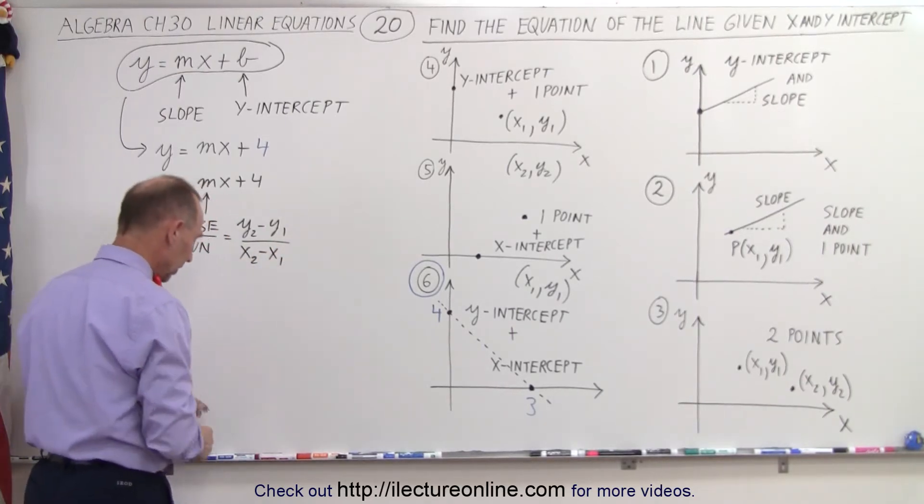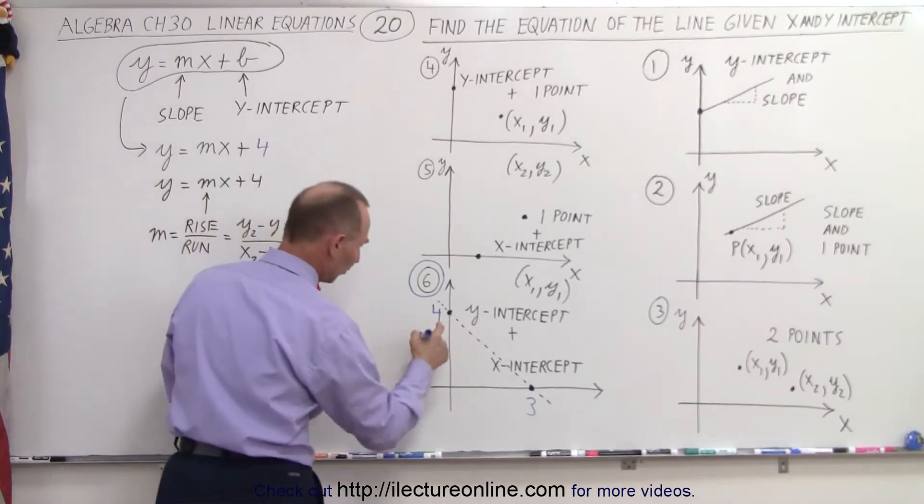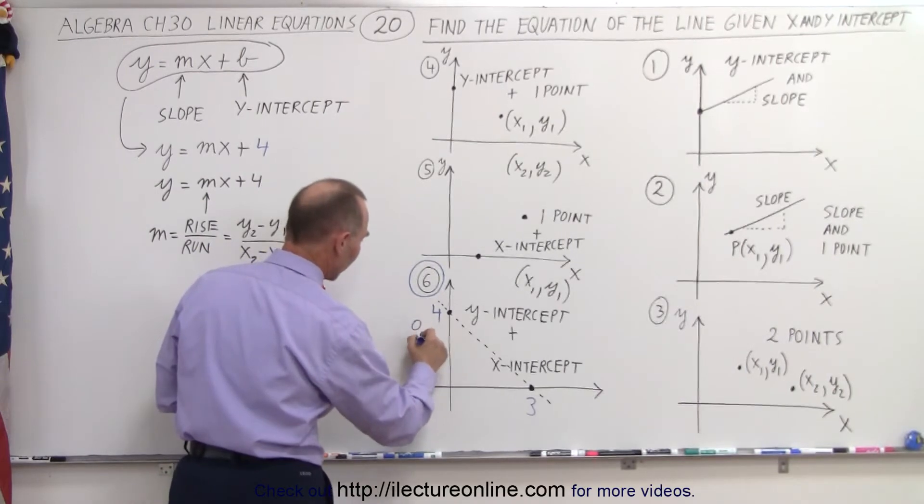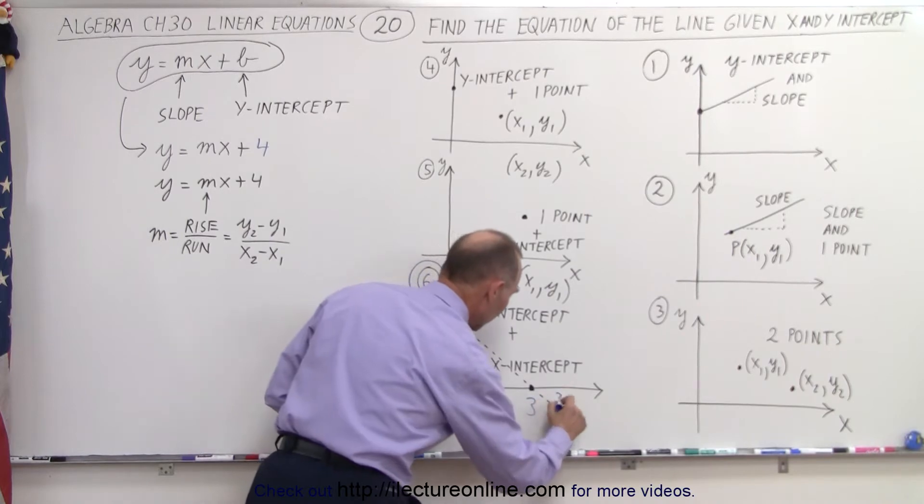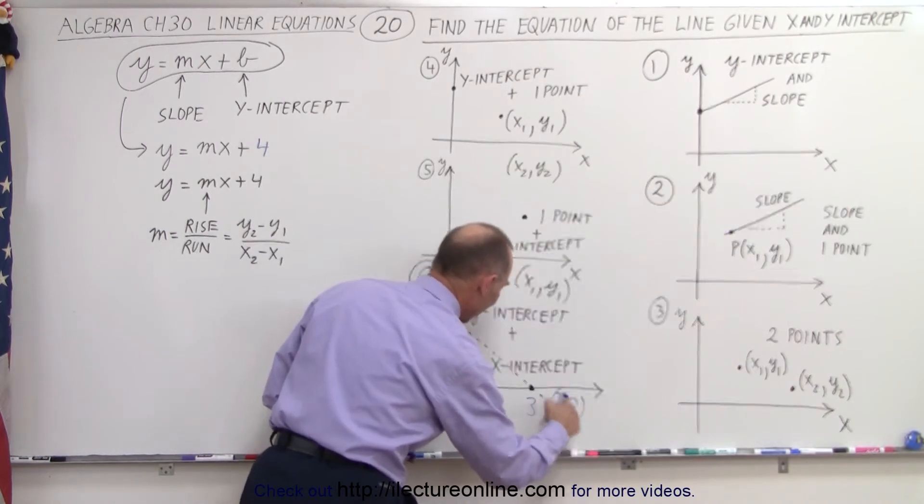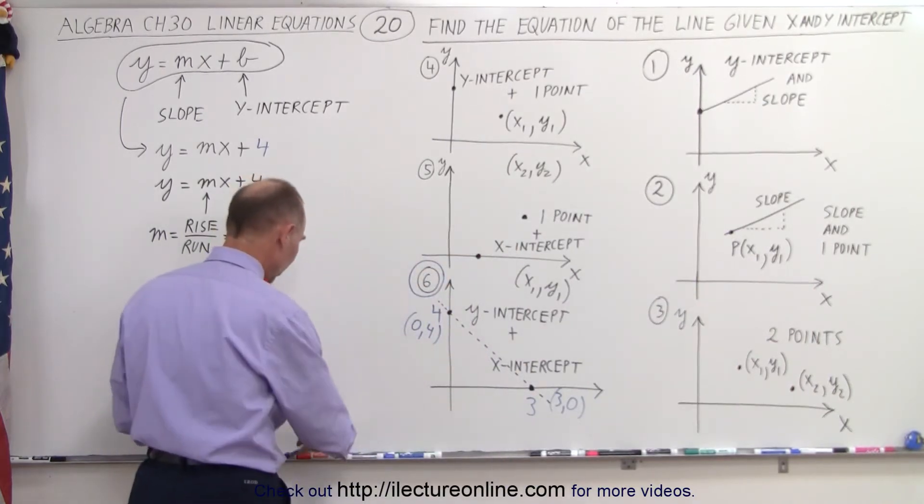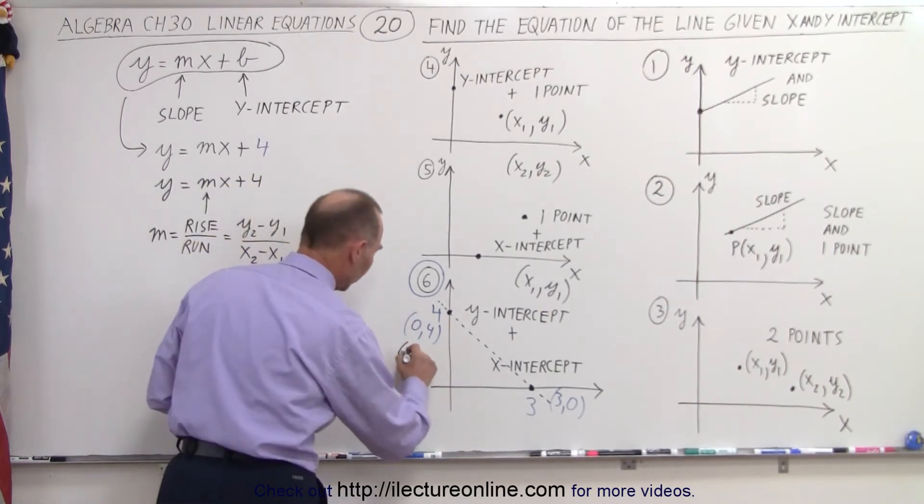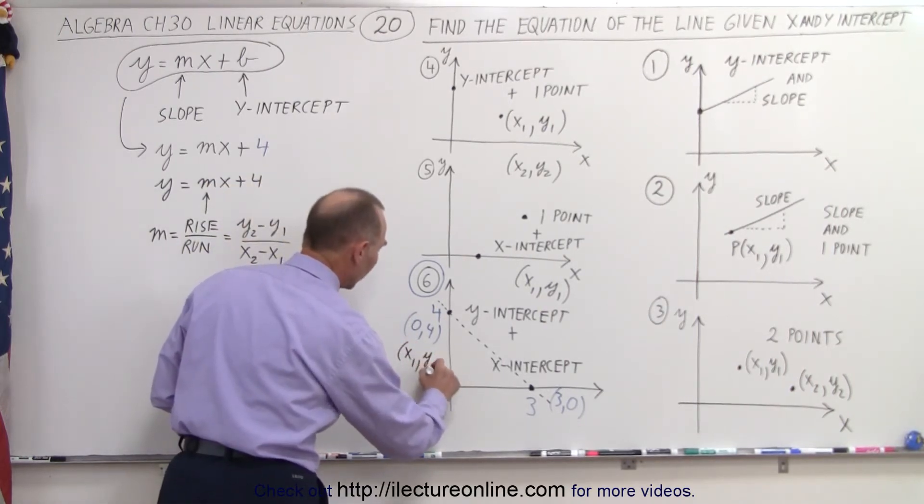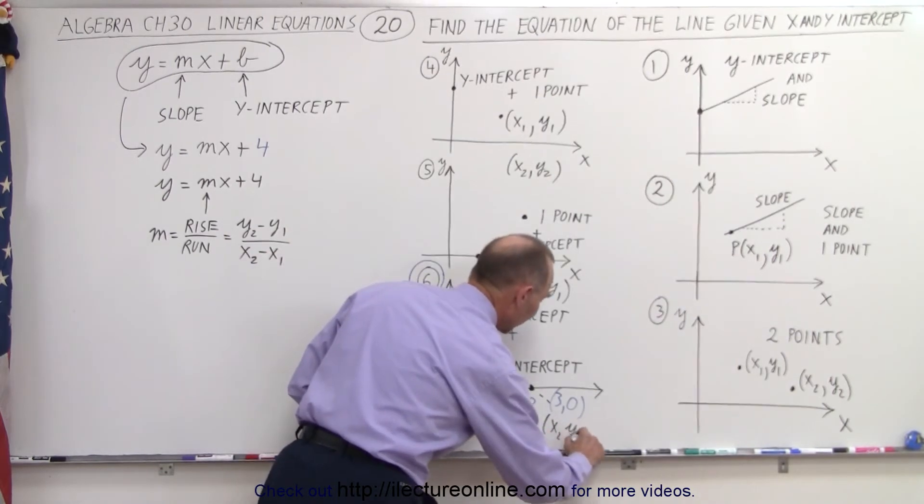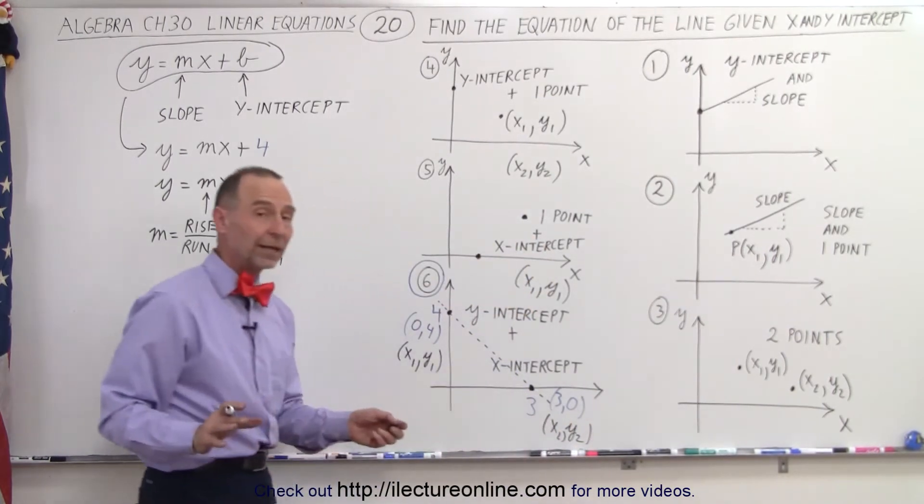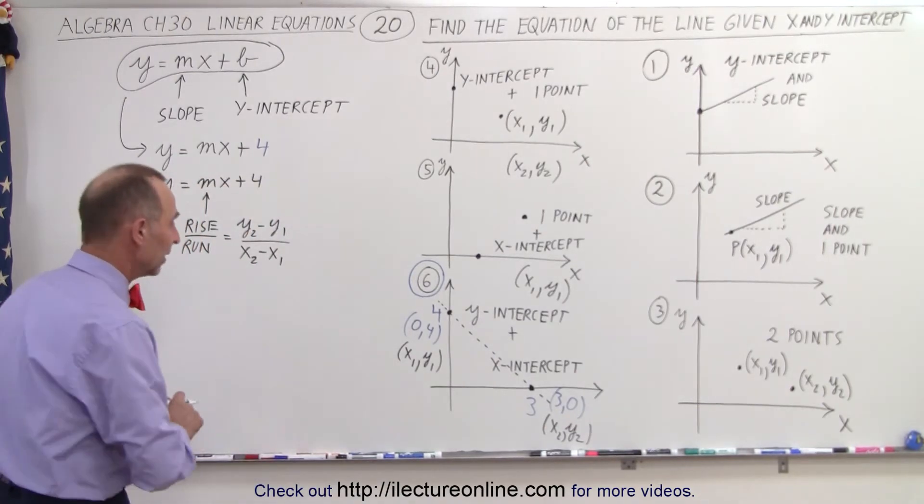So we have to identify the two points. So here, our first point is the point (0, 4), and the second point is (3, 0). So those are the x and y coordinates of our two points. Let's define this as our point 1, so this is x1, y1, and define this as x2, y2. And again, it doesn't matter what order you put that in. You can reverse the order and it doesn't make any difference.